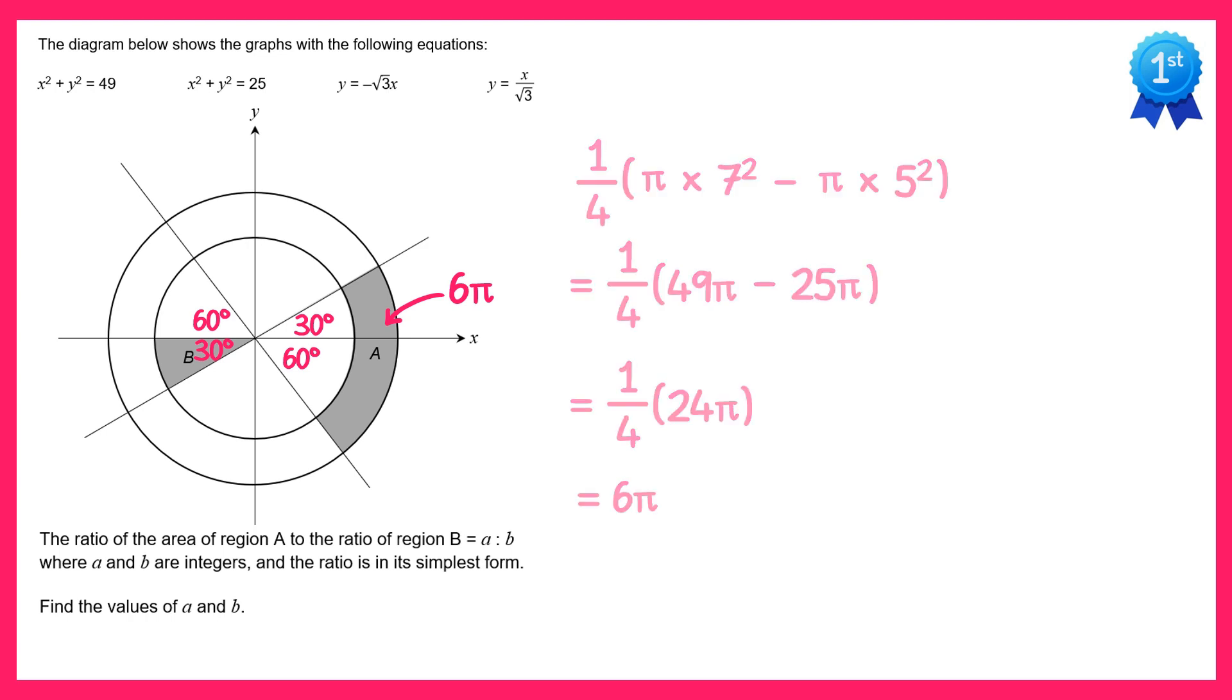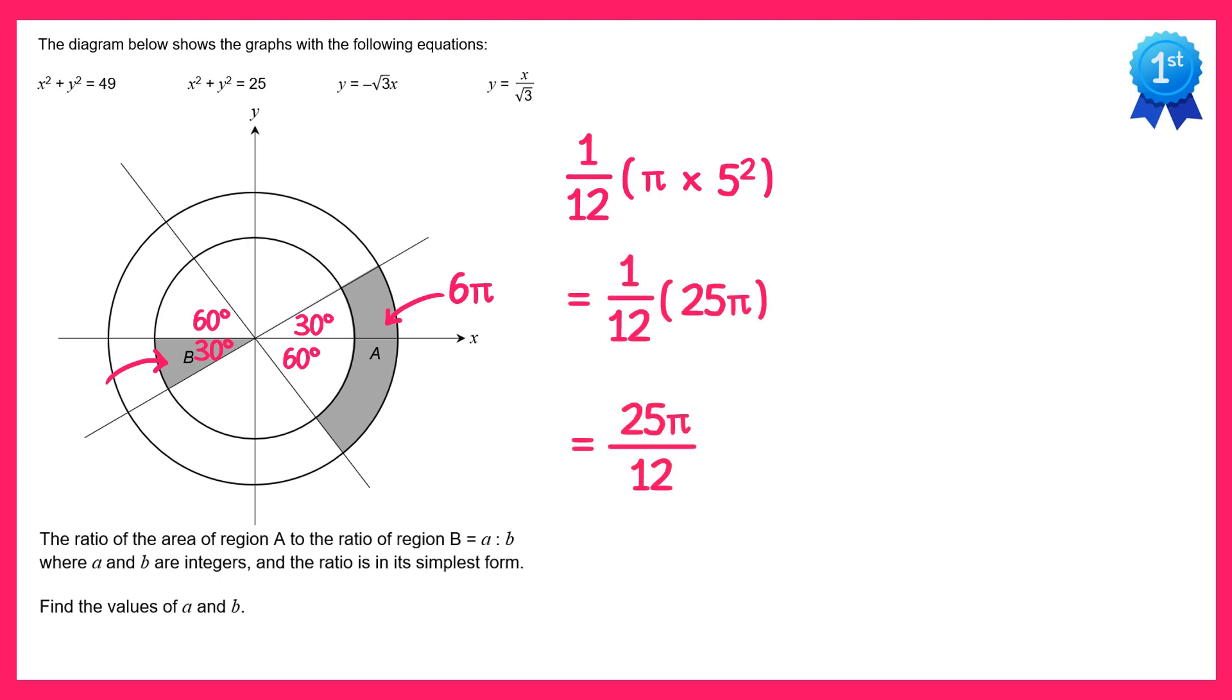Now let's look at B. We can see clearly the angle for section B is 30 degrees so it's just a sector of a circle. 30 divided by 360 is the same as a twelfth so we need a twelfth of the inner circle. The area of the inner circle is pi times 5 squared so we'll need a twelfth of 25 pi which is 25 pi over 12.